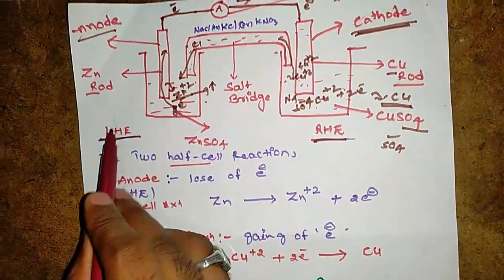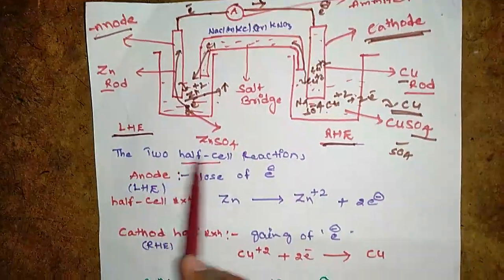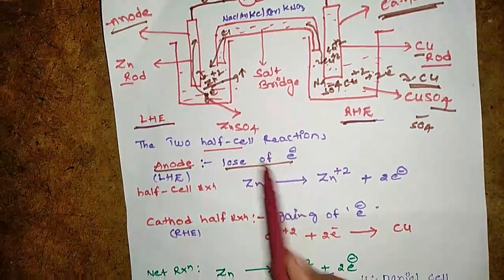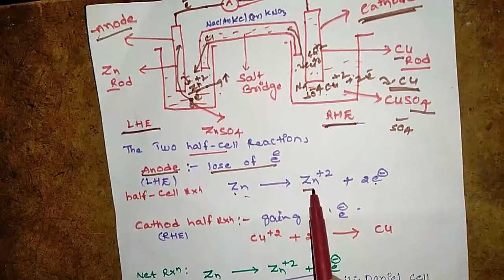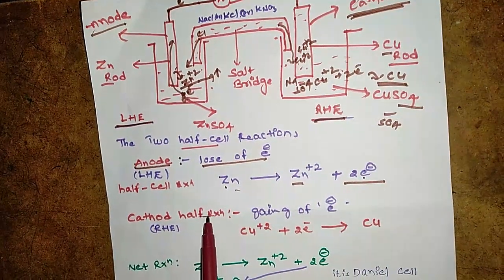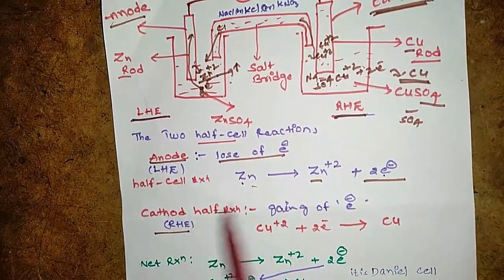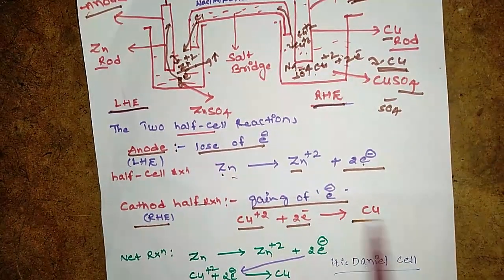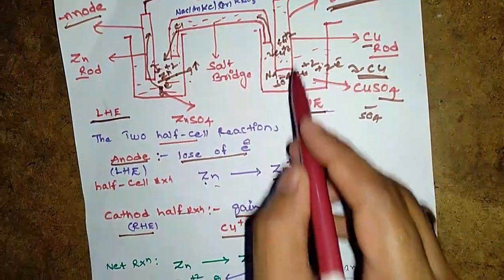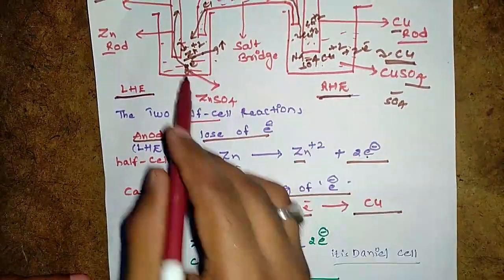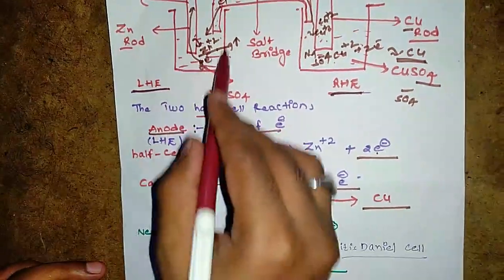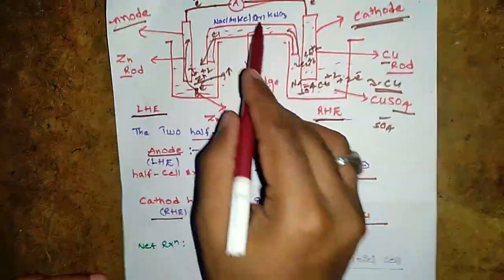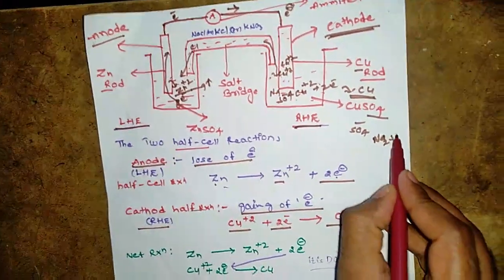On the left-hand side is the anode. The anode half-reaction involves the zinc rod losing two electrons: Zn → Zn²⁺ + 2e⁻. On the right-hand side is the cathode, where copper ions gain electrons forming copper: Cu²⁺ + 2e⁻ → Cu. Excess Zn²⁺ ions are neutralized by chloride ions, and excess SO₄²⁻ ions are neutralized by sodium ions from the salt bridge.